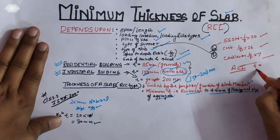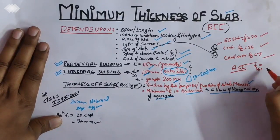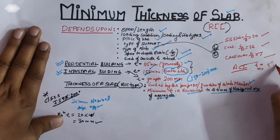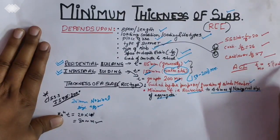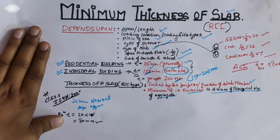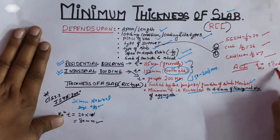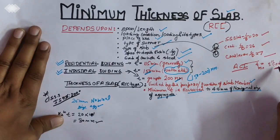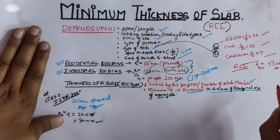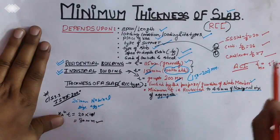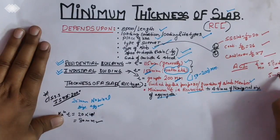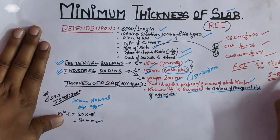Minimum thickness T minimum should be 5 inches. And it should not be less than that. ACI also tells that it varies from 5 to 8 inches.